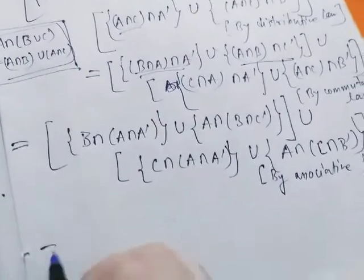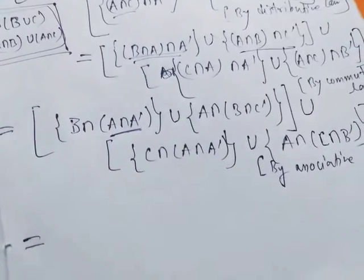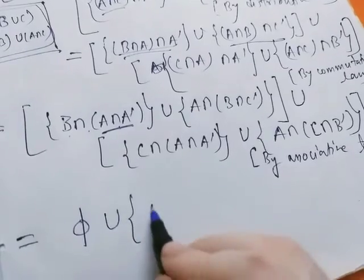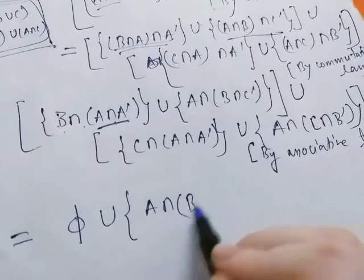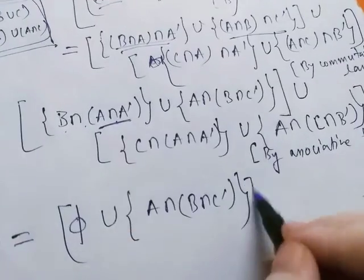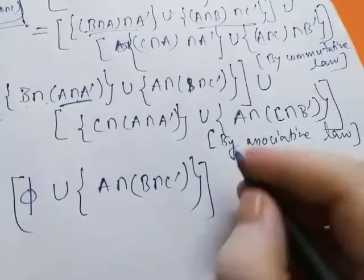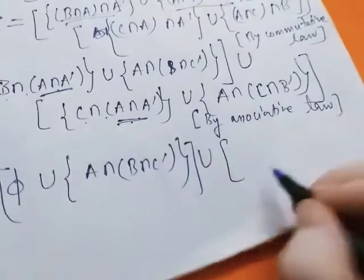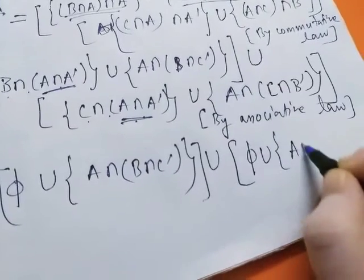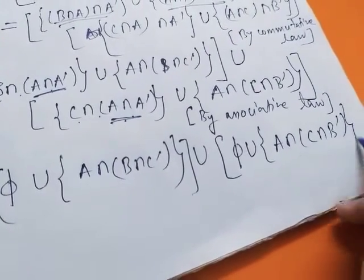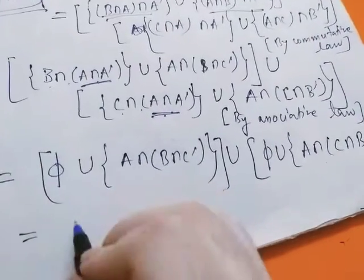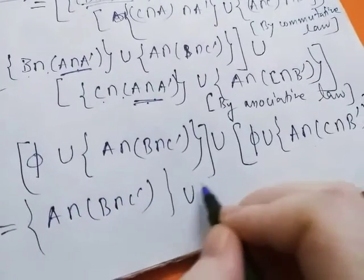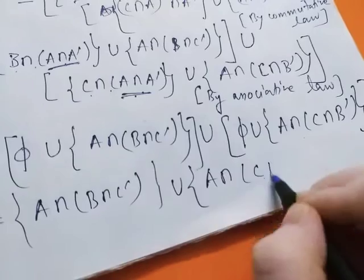Union C intersection A intersection A complement union A intersection C intersection B complement. Now B intersection A intersection A complement equals phi. So A intersection B intersection C complement union phi, and C intersection phi is also phi, union A intersection C intersection B complement.